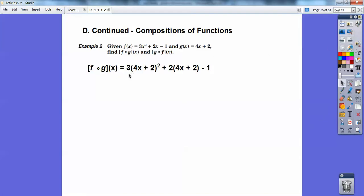So f of g of x is wherever I see an x in my f of x, I plug in the function g of x, which is 4x plus 2. So it's 3x squared, so it's going to be 3 times the quantity, 4x plus 2 squared, and then plus 2x, but my x is 4x plus 2. And then careful when you foil that out, 4x plus 2 times 4x plus 2 is 16x squared plus 16x plus 4. You have to foil it out. And then I'm going to go ahead and distribute that 3 through and then combine like terms, and so there it is right there. You come up with that one.